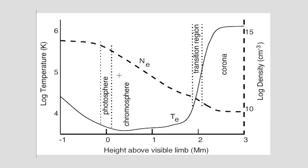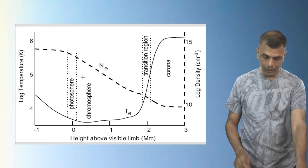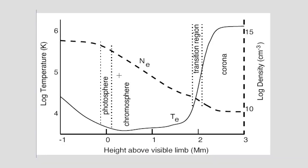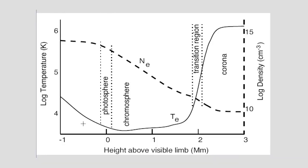The outer atmosphere of the sun is very special because it's much hotter and also much less dense compared to the visible surface. To illustrate how much hotter and less dense, there's a graph where the x-axis shows height above the solar surface on a logarithmic scale — the photosphere at the origin, then 10 megameters, 100 megameters, and so on.